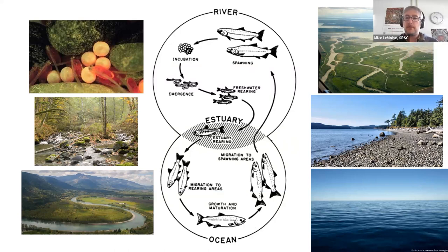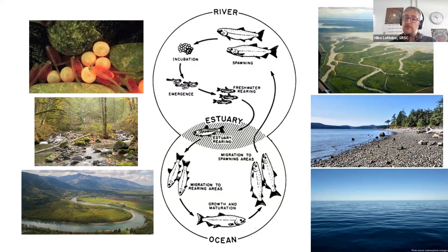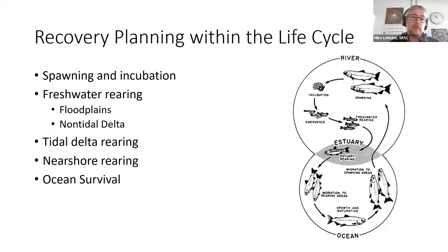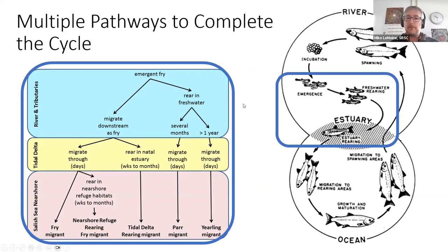The recovery plan tries to highlight this — both from smothering of eggs, which Gus and Kurt talked about in the previous spring meeting, and how successful we've been working with timber industries to reduce sediment rates. Tributary impacts, floodplains, the estuary, near shore areas, and the open ocean are all major components of the recovery plan. Within the life cycle, there are some distinct life history pathways.